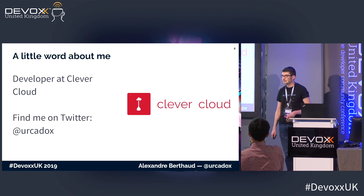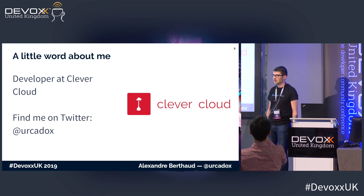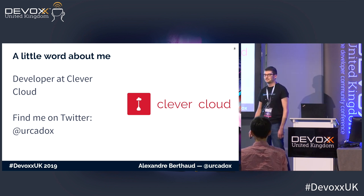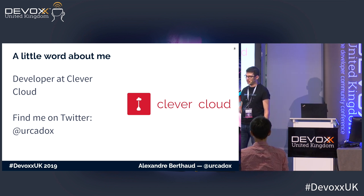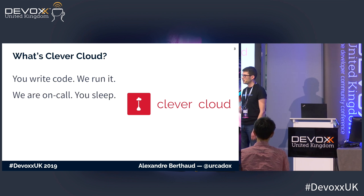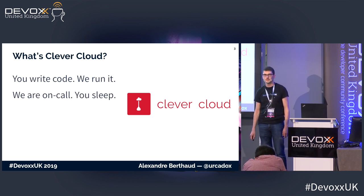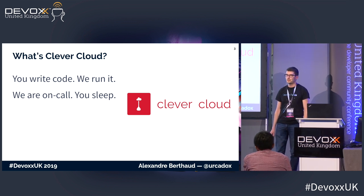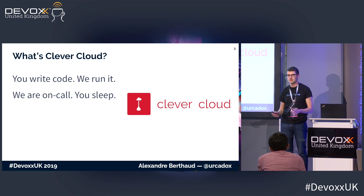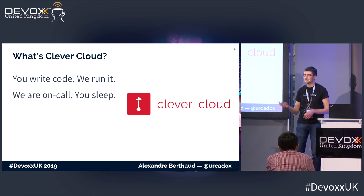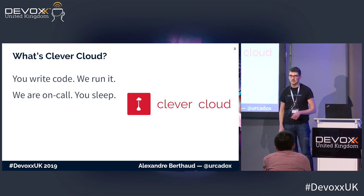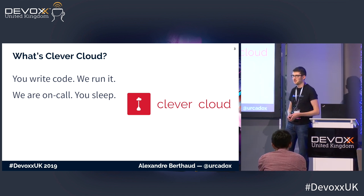First off, a little word about me. I'm Alexandre Berthaud. I'm a developer at Clever Cloud. You can find me on Twitter. At Clever Cloud, what we do is a platform as a service — it's a hosting platform targeted towards developers. As a developer, you just git push and we handle the rest. We want to make developers' life easier, so you don't have to deal with servers, network infrastructure, security updates, and stuff like that. That's our job. You can sleep well and we wake up when something goes wrong.